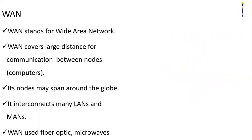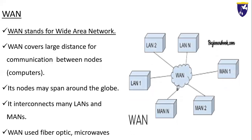Now we are going to study what WAN is. WAN stands for Wide Area Network. As the name shows, this is also a computer network, but it can span a very wide area. A Wide Area Network covers large distances for communication between nodes or computers.